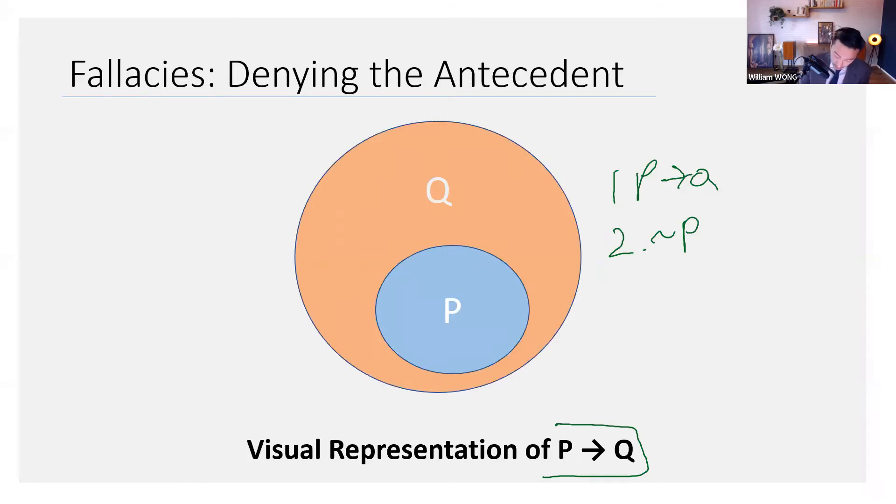If you say not P, what you're saying is you're not inside the circle here, right? However, you could be, when you're not P, you could be inside here or you could be out here.